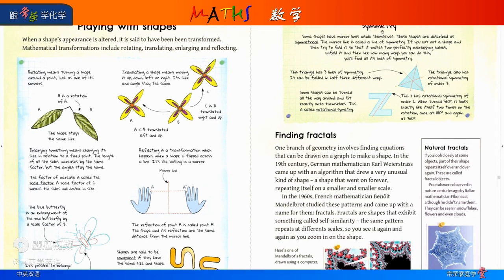Symmetry. Some shapes have mirror lines inside themselves. These shapes are described as symmetrical. The mirror line is called a line of symmetry. If you cut out a shape and try to fold it so that it makes two perfectly overlapping halves, unfold it and see how many ways you could do this. You'll find all its lines of symmetry. This triangle has three lines of symmetry. One line here. One line here. And here. It can be folded in half three different ways.